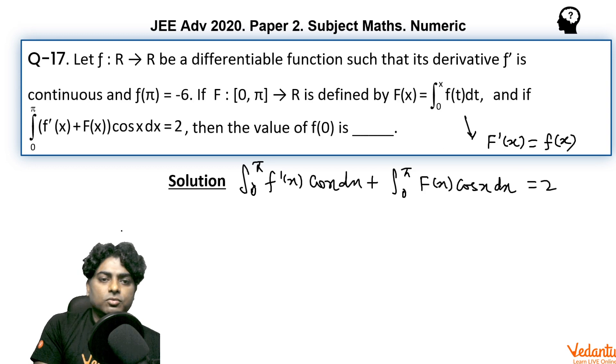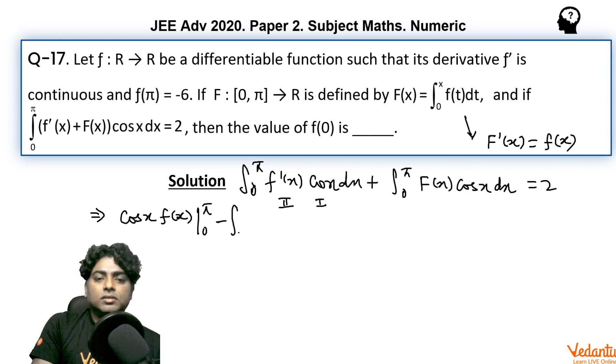Now applying integration by parts to the first integral, I'm going to take f'(x) as first function and cos(x) as second. So I would write cos(x)·f(x) from 0 to π minus integral from 0 to π of (-sin(x))·f(x)dx.